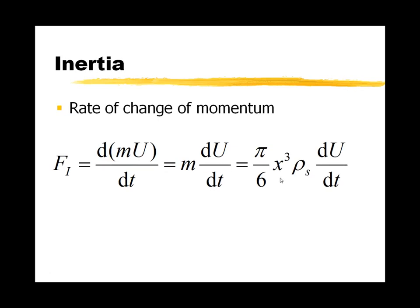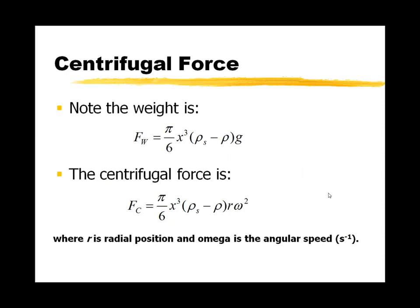If we wanted to consider the momentum of the particle, we could do that using force equals mass times acceleration again. The mass doesn't change, only the velocity, so we can bring mass outside the term. The inertial force is simply mass times acceleration, expressed in terms of volume and density. However, we will ignore the inertia of the particle for the rest of the lecture.